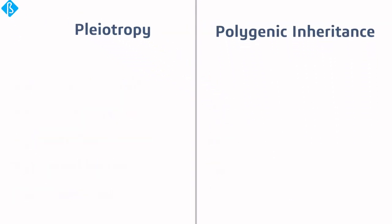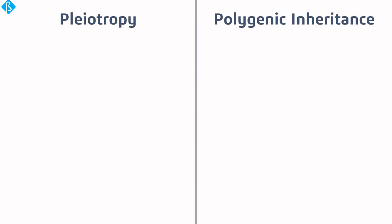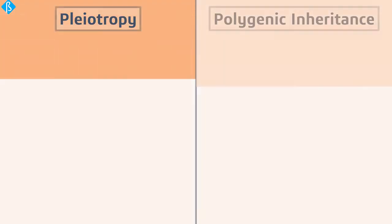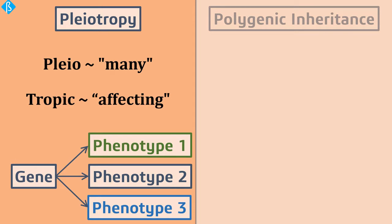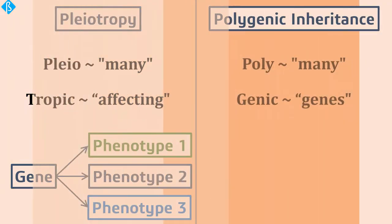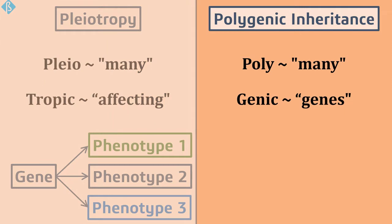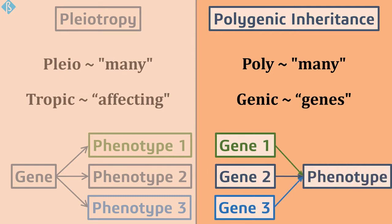Many of us mix up these two, but if we see them closely, the difference is quite clear from their names. Pleiotropy is derived from the Greek word 'pleio' meaning many and 'tropic' meaning affecting, so pleiotropy means one gene affecting multiple phenotypes. Polygenic inheritance — 'poly' means many and 'genic' means genes — so polygenic means many genes affecting a single phenotype. Just a game of words.